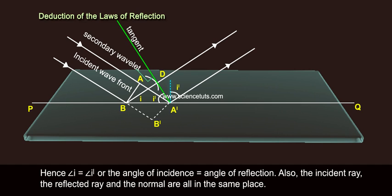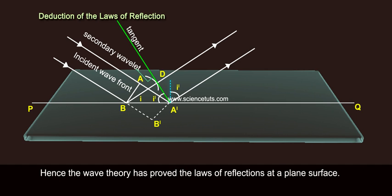Also, the incident ray, the reflected ray and the normal are all in the same plane. Hence, the wave theory has proved the laws of reflections at a plane surface.